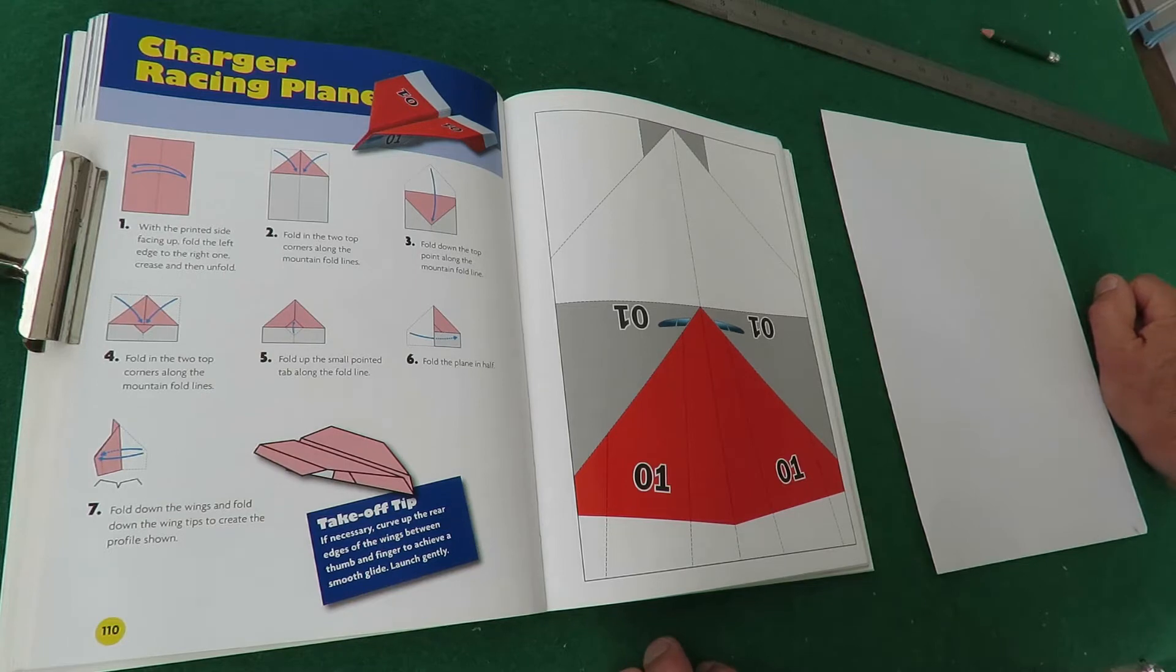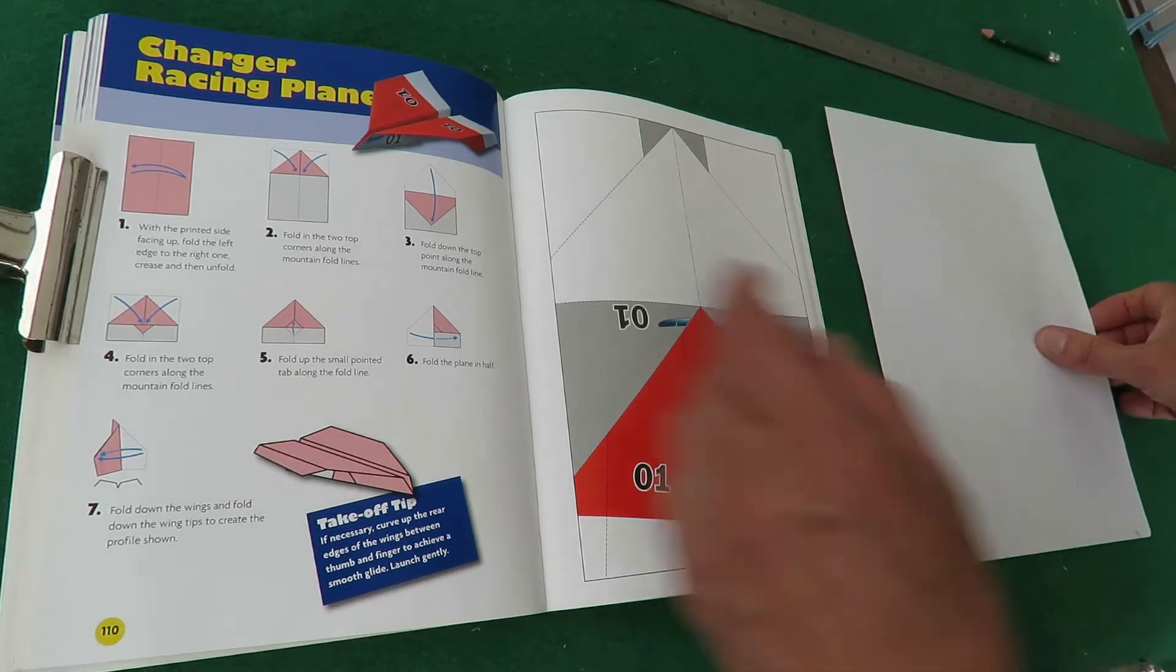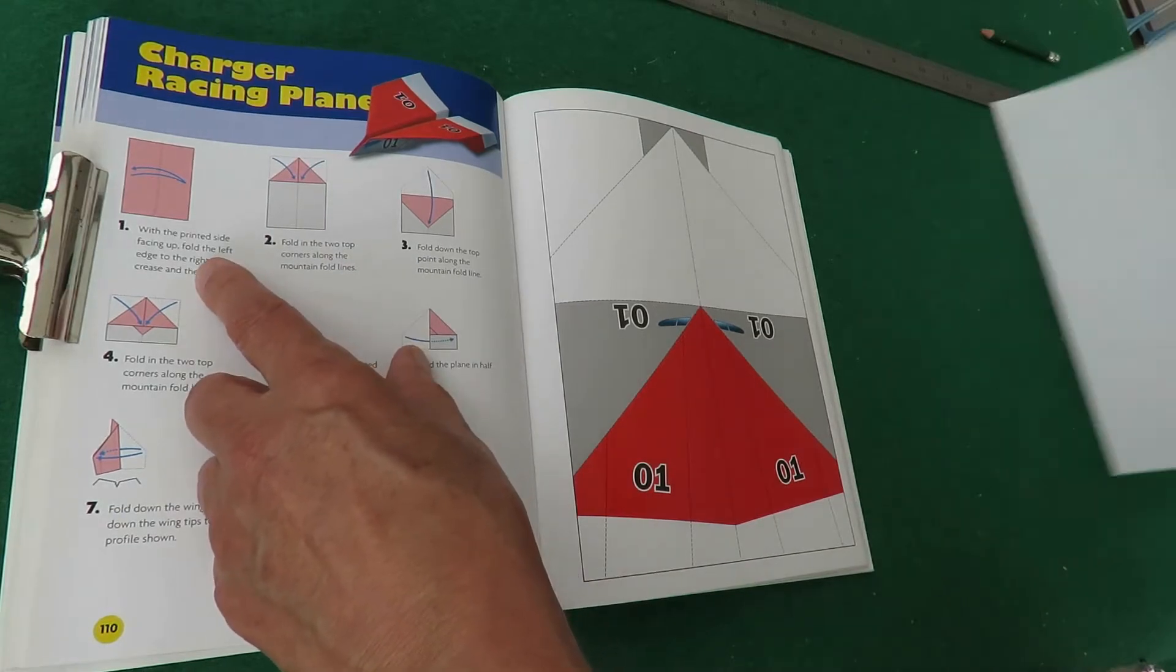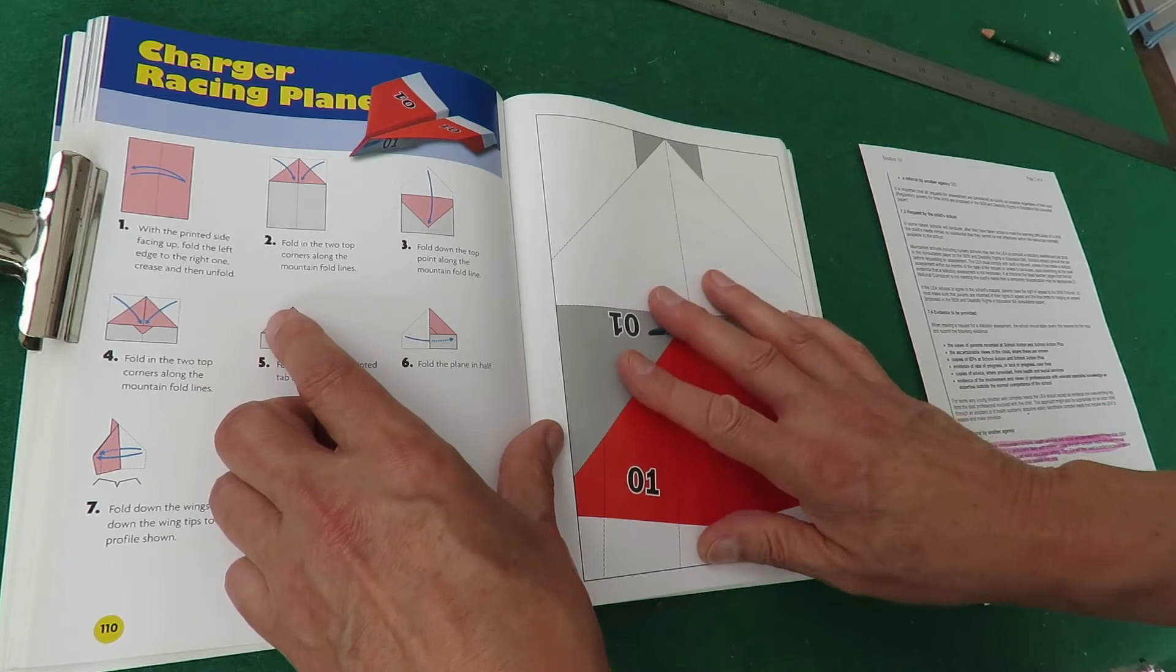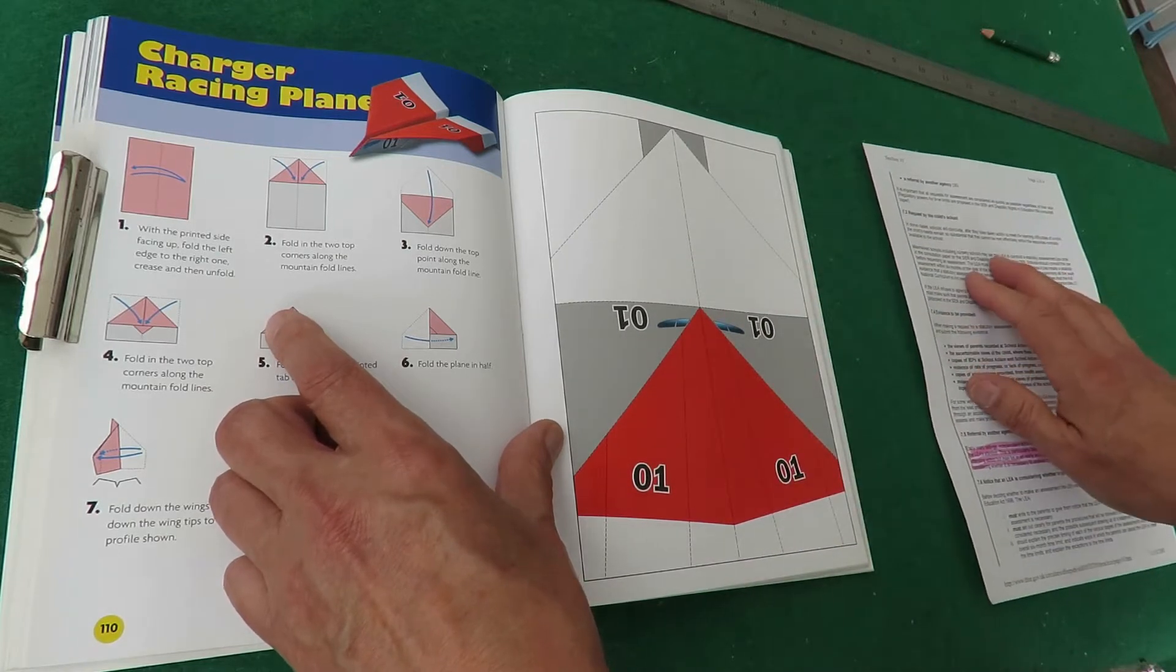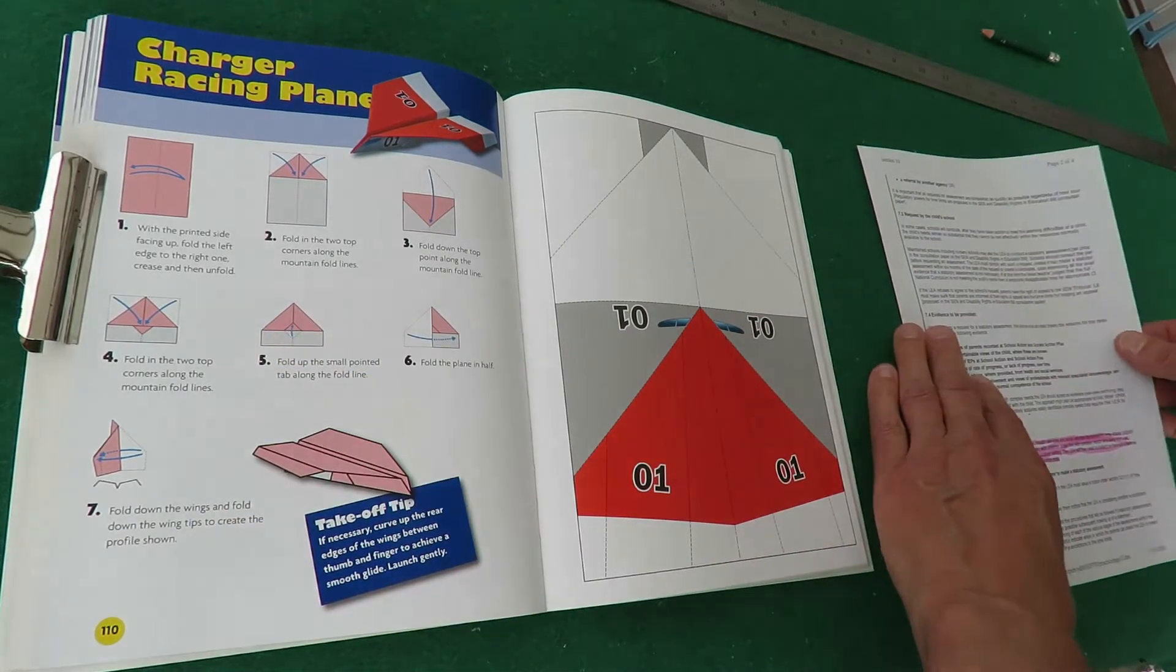So where are we going to start? With printed side face up, and when they mean printed side they mean the bit with the pretty picture on it, but I happen to have second-hand paper. Fold it in half.